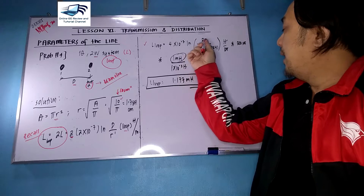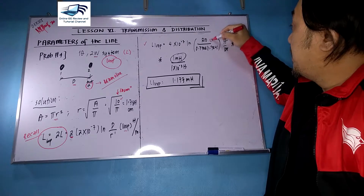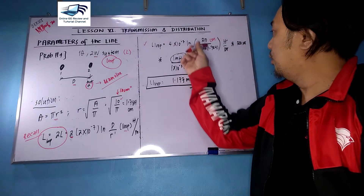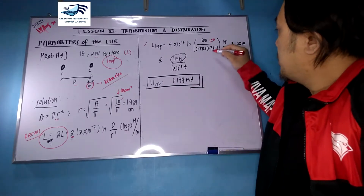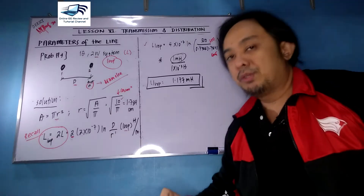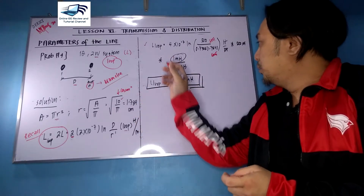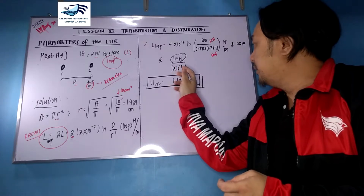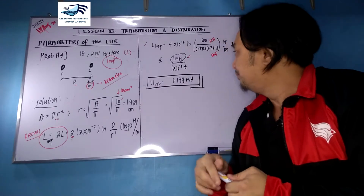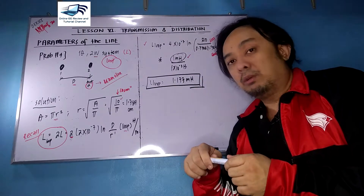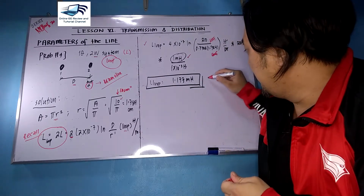Substituting all the values: 4 times 10⁻⁷ times ln(500 centimeters divided by 0.7788 times 1.784 centimeters) — both in centimeters so units cancel — giving henry per meter. Multiply by 500 meters, then convert by multiplying by 1 millihenry over 10⁻³ henry. The loop inductance answer is 1.177 millihenry.